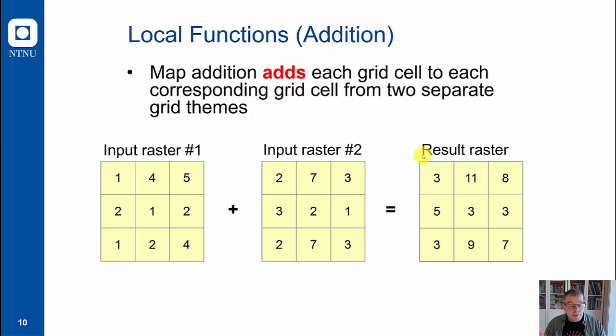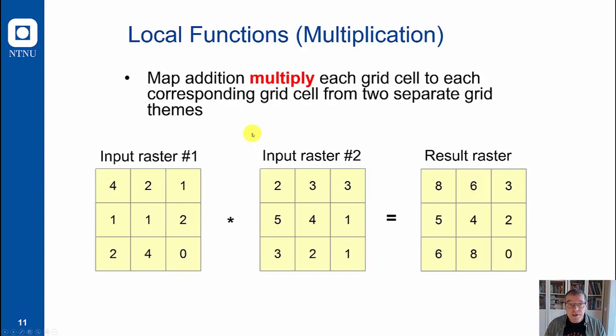This can also be done using two input rasters with the same principle. You compare the values in the same pixel position for the two input rasters. From input raster one you take the value in this cell position and add it to this pixel value in this pixel position. It is written to the same pixel position in the result: 1 plus 2 equals 3, 4 plus 7 equals 11, etc. This was the addition, and of course we can have multiplication. You take 4, multiply it with 2, and the output value is written to the same pixel position: 8.